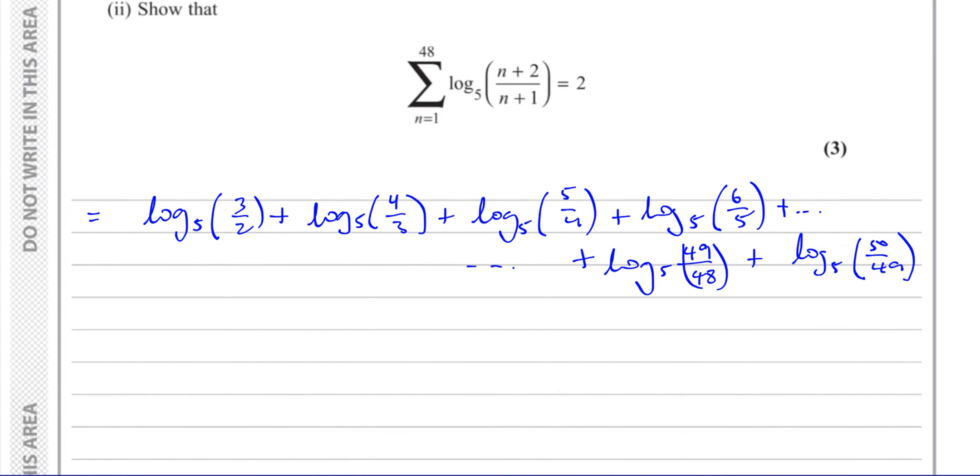Now, with the laws of logarithms, when you have log to the same base of a number plus log to the same base of another number, we can combine them by multiplication. This is log to the base a of b times c. So I can combine all of these together, because they're all added together, as log to the base 5 of 3 over 2 times 4 over 3 times 5 over 4 times 6 over 5 times all the way up to 49 over 48 times 50 over 49.